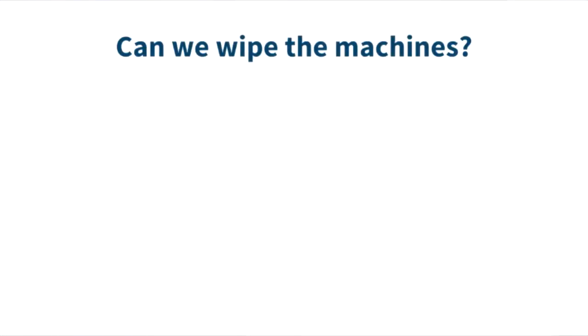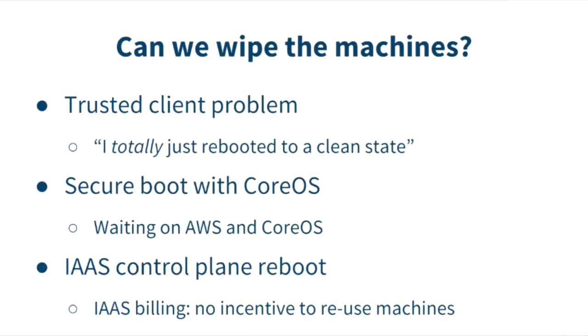Some might ask: if the problem is that things run inside containers could mess with our machines, why can't we just wipe the machines to a clean known state? This falls into the trap of the trusted client problem. You can reboot it with constraints — and that's what Secure Boot is aiming to do, which we have landing in CoreOS soon and on AWS later.